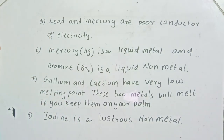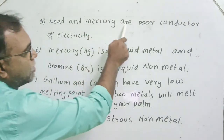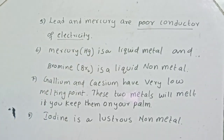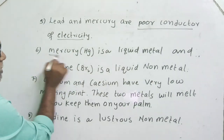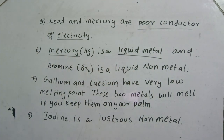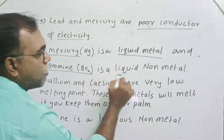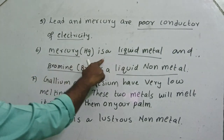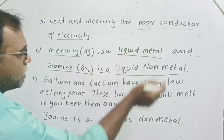Lead and mercury are poor conductors of electricity. Mercury is a liquid metal, and bromine is a liquid non-metal. Remember: mercury is a liquid metal, and bromine is a liquid non-metal.